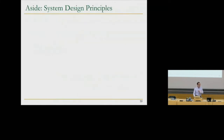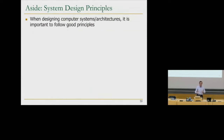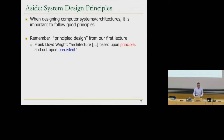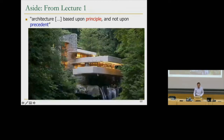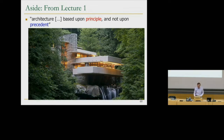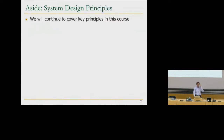Whenever designing computer systems, it's important to follow good principles — as Frank Lloyd Wright said, architecture should be based upon principle and not upon precedent. Key system design principles include keeping it simple (Einstein: 'everything should be made as simple as possible, but no simpler') and keeping it low cost ('an engineer is a person who can do for 10 cents what any fool can do for a dollar'). Single-cycle microarchitecture violates both. Butler Lampson's 1983 paper 'Hints for Computer System Design' is a highly recommended reference for these principles.